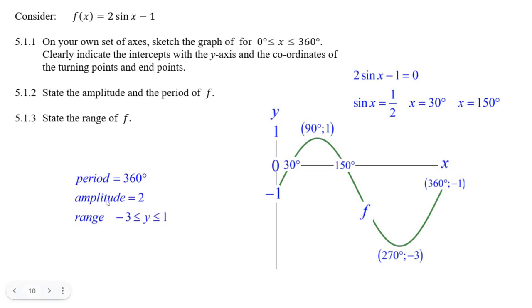What's the amplitude? The amplitude is 2. That's how tall the wave is. What's the period, the distance it takes to go through a complete wave? It's 360 degrees.